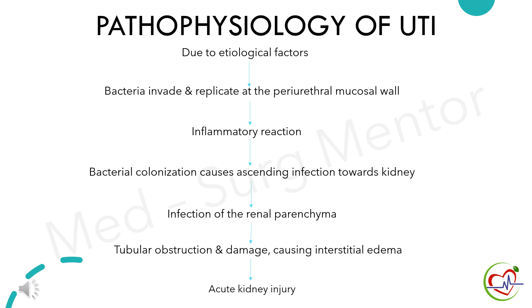Pathophysiology of urinary tract infection: Due to etiological factors, bacteria invade and replicate at the periurethral mucosal wall, which leads to an inflammatory reaction. The bacterial colonization then causes ascending infection towards the kidney. This results in infection of the renal parenchyma. Gradually, as the condition worsens, there is tubular obstruction and damage causing interstitial edema. Finally, it results in acute kidney injury.